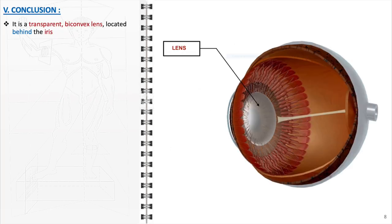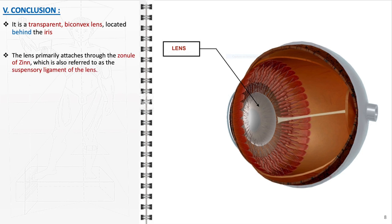In summary, the lens is described as a transparent, biconvex structure, located behind the iris, which is crucial for its role in focusing light onto the retina. The lens is primarily attached to the ciliary body by the zonule of Zinn, also known as the suspensory ligament of the lens. This attachment is essential for maintaining the lens's position in the eye and plays a key role in the process of accommodation.